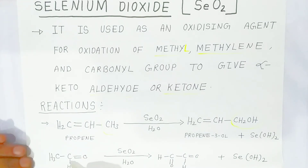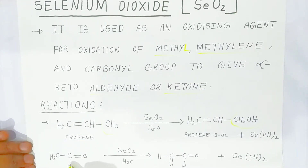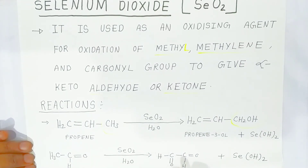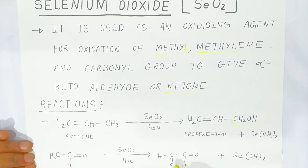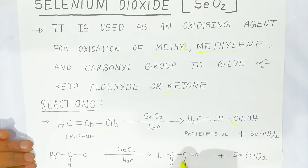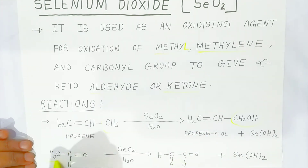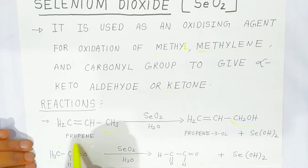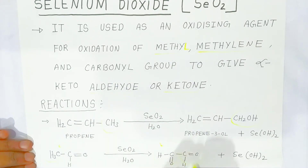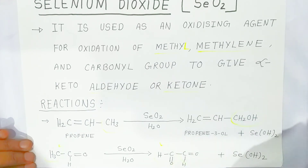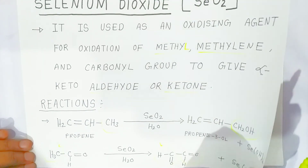Similarly, if it is an aldehyde, it is converted into a keto-aldehyde type compound — the adjacent position also gives an aldehyde group, with selenium dihydroxide as a byproduct. These are very important reactions.